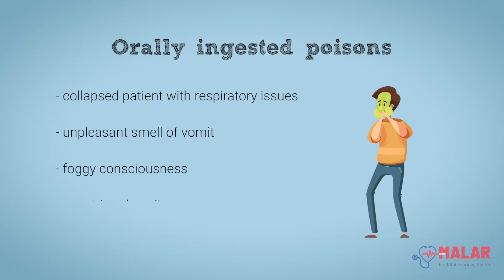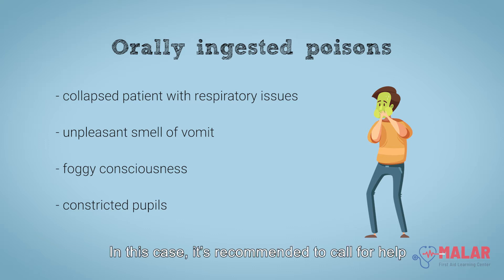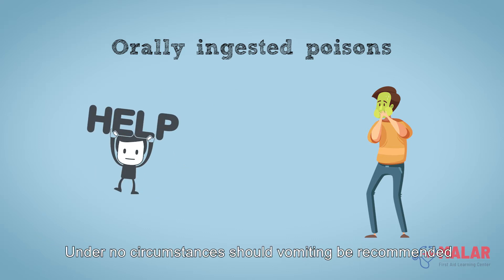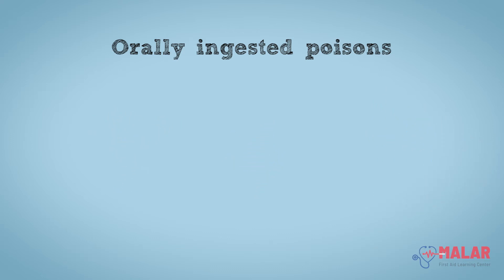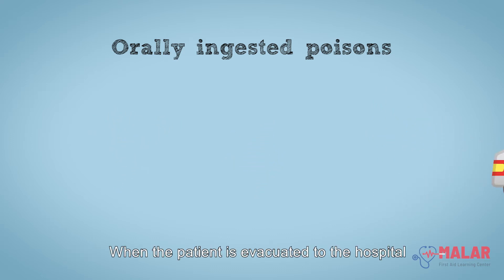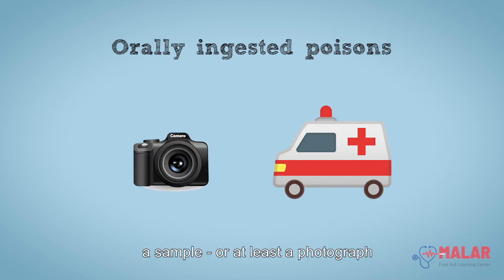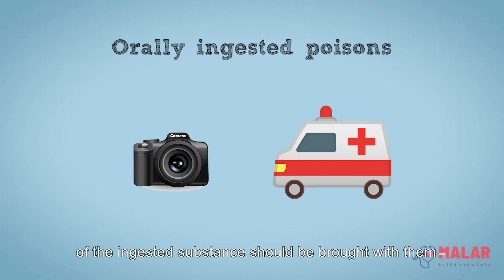A textbook case of orally ingested poisoning presents in a collapsed patient with respiratory issues, an unpleasant smell of vomit, foggy consciousness, and constricted pupils. In this case, it's recommended to call for help. Under no circumstances should vomiting be recommended. When the patient is evacuated to the hospital, a sample or at least a photograph of the ingested substance should be brought with them.